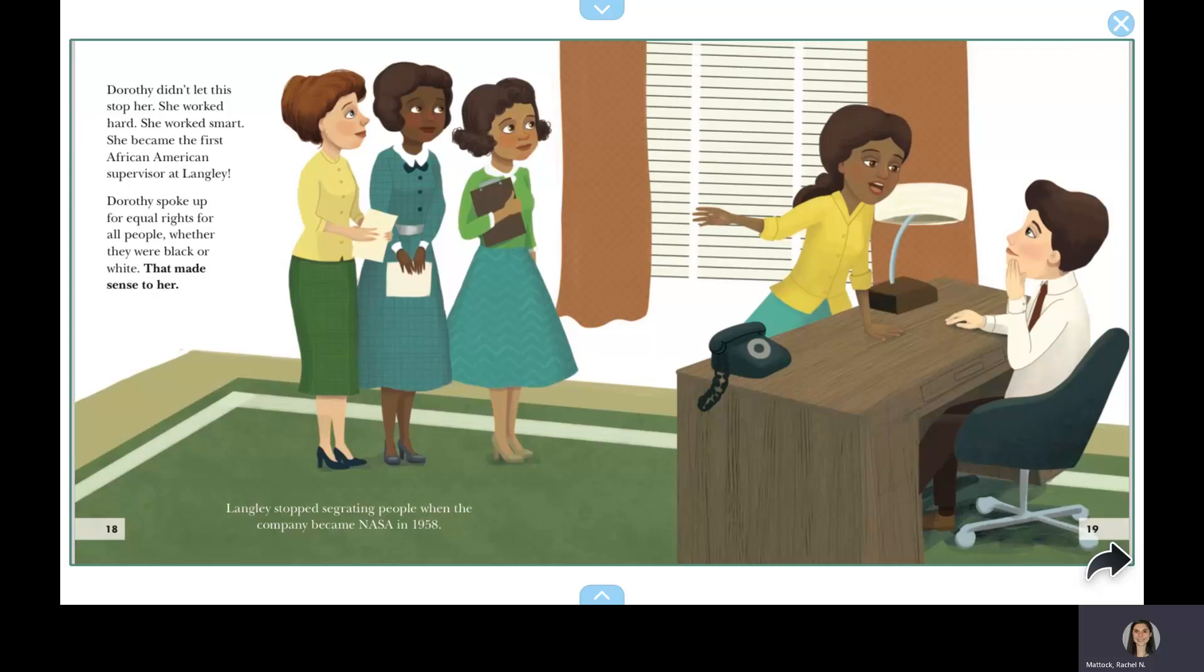Dorothy didn't let this stop her. She worked hard. She worked smart. She became the first African American supervisor at Langley. Dorothy spoke up for equal rights for all people, whether they were black or white. That made sense to her. Langley stopped segregating people when the company became NASA in 1958.